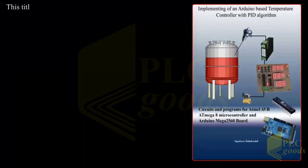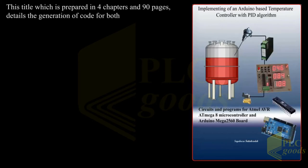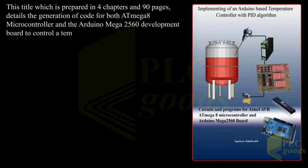Alright, let me introduce the prepared ebook briefly. This title, which is prepared in 4 chapters and 90 pages, details the generation of code for both ATmega8 microcontroller and the Arduino Mega 2560 development board to control a temperature process.